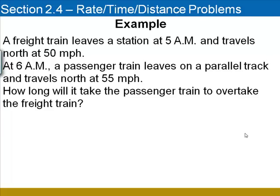The example we'll be looking at is a train example. A freight train leaves a station at 5 a.m. and travels north at 50 miles per hour. At 6 a.m. a passenger train leaves on a parallel track and travels north at 55 miles per hour. How long will it take the passenger train to overtake the freight train?